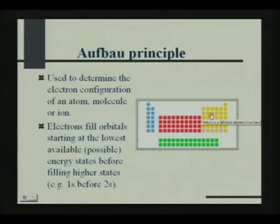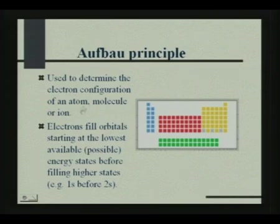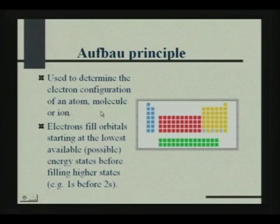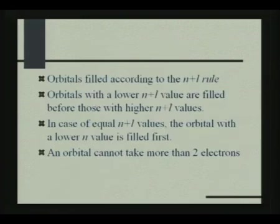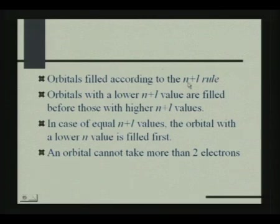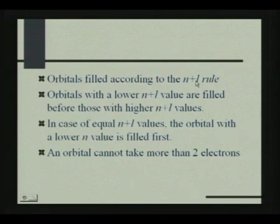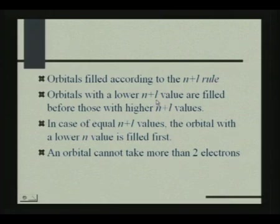What is the Aufbau principle? The Aufbau principle is used to determine the electronic configuration of an atom, molecule or ion. We can also determine the electronic configuration for an ion. In this principle, electrons fill orbitals starting at the lowest level possible — that is, 1S before 2S. Orbitals are filled according to the N plus L rule, where N is the principal quantum number and L is the azimuthal quantum number. Orbitals with a lower N plus L value are filled before those with higher N plus L values.